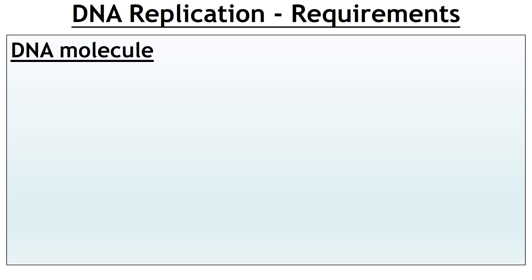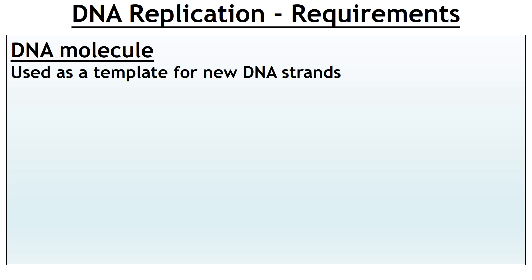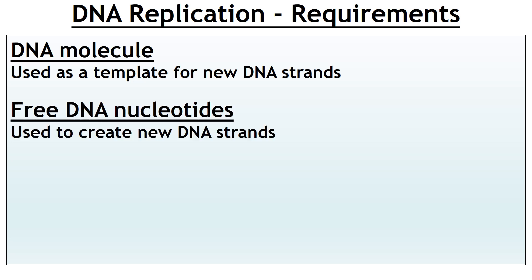In order for DNA replication to occur, you require a number of things. First of all is the DNA molecule itself — your DNA double helix — and you're going to use that as a template to make your new DNA strands. Second, you've got your free DNA nucleotides. Remember your nucleotides from the first topic: your deoxyribose sugar, your base, and your phosphate — you need those with your different bases.